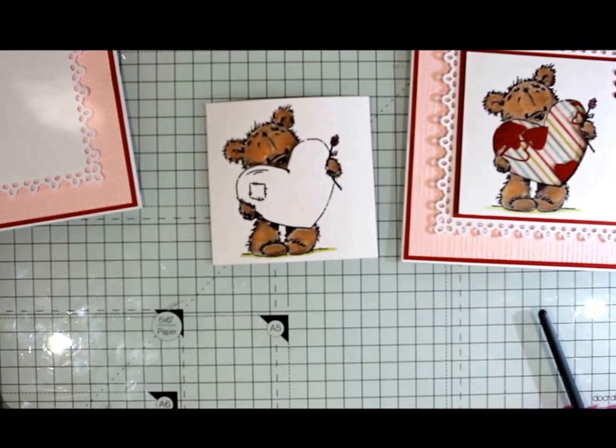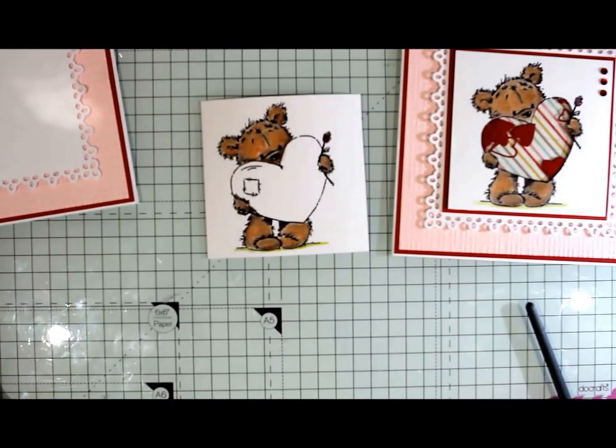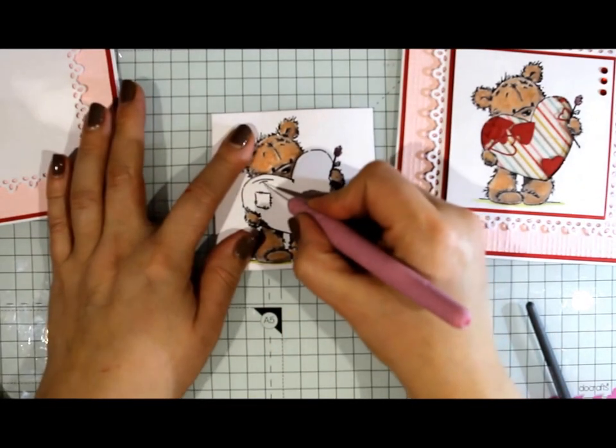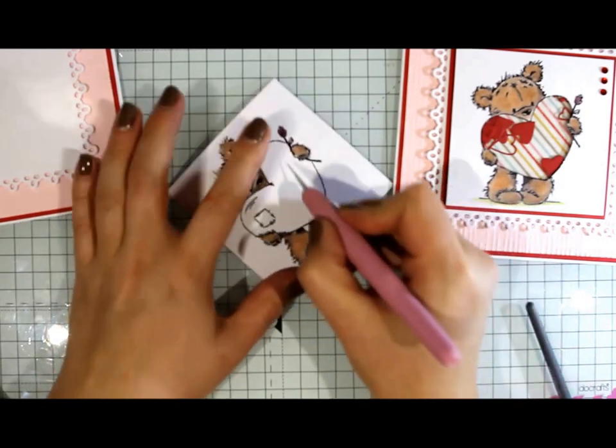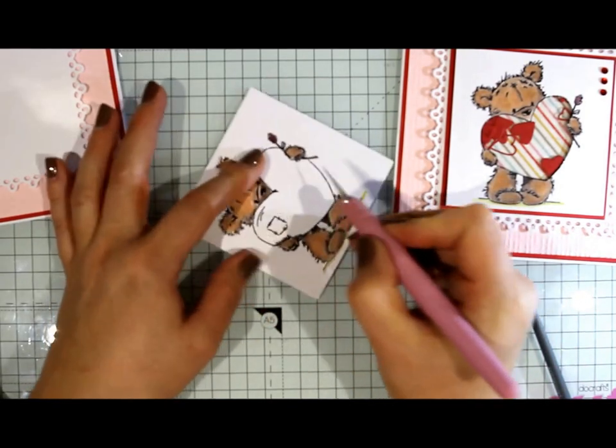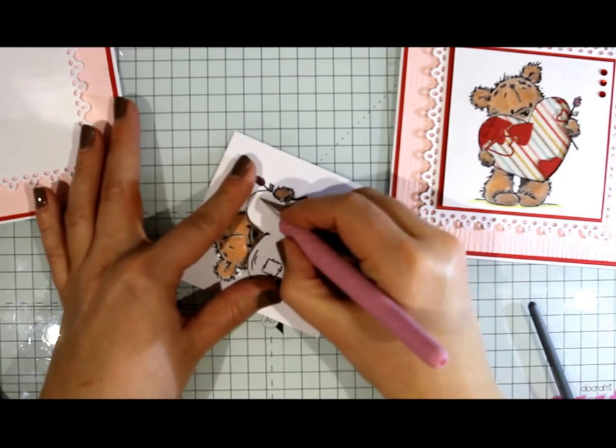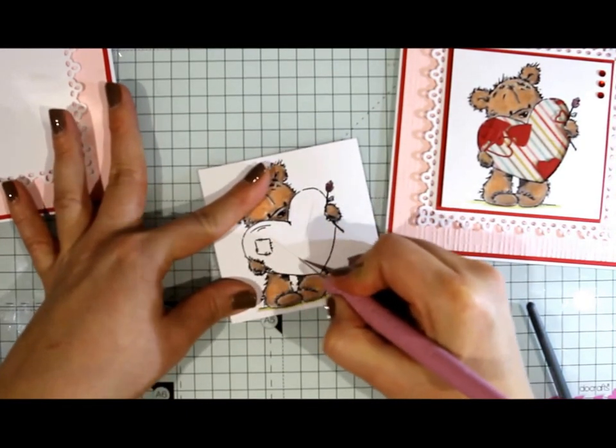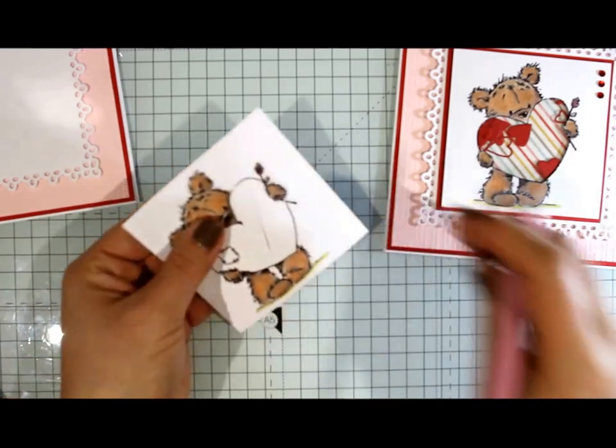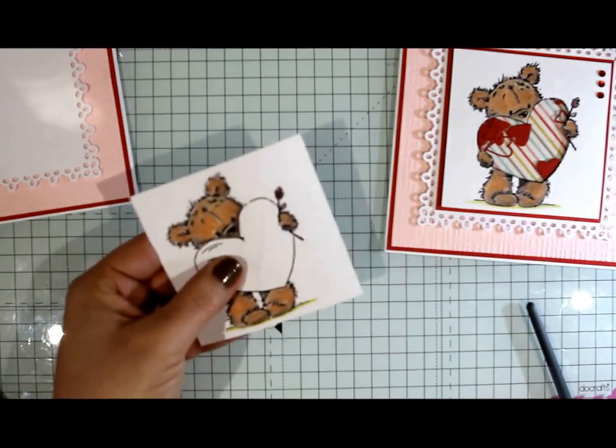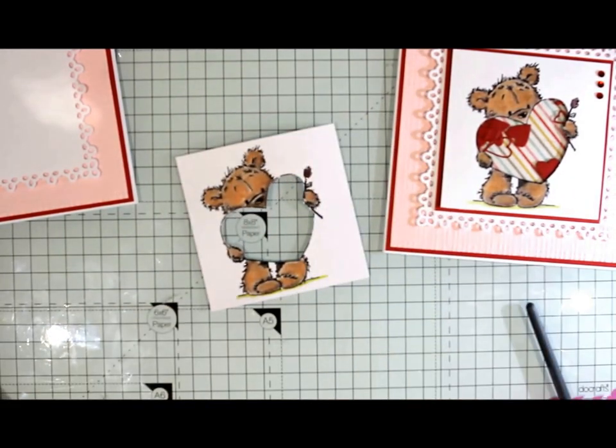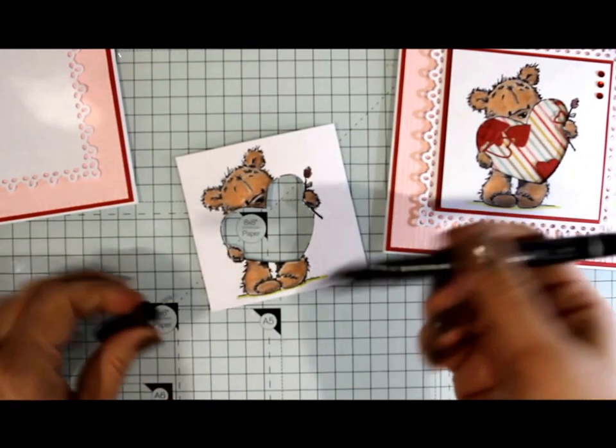What you're going to do next is cut out the heart. This is where the shaker part of our card is going to be. I'm just going to make a big cross through the middle which makes it easy for us to get our scissors in there. I'll put you on pause for a minute just while I cut that out. As you can see I've cut out the heart.